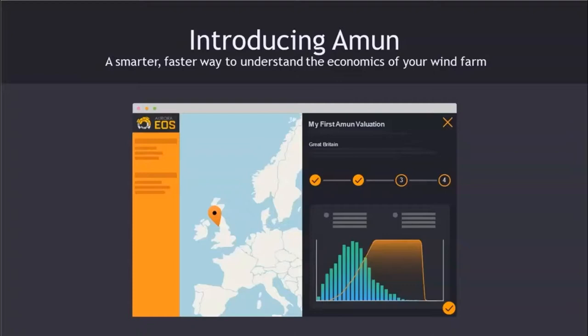So what is Amun? Amun is a tool that allows you to very quickly understand the exact economics of a given wind site by combining Aurora's in-house trusted price curves with detailed wind data and turbine data — all within just a few clicks. We built it because we realized that location will increasingly drive revenue, and knowing how correlated you are with the fleet will determine what prices you capture in the market.